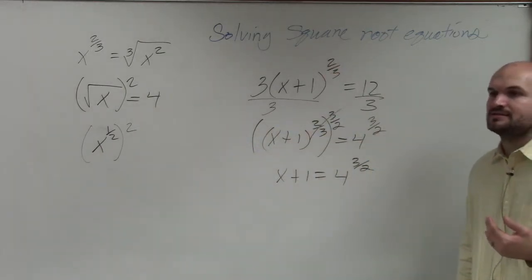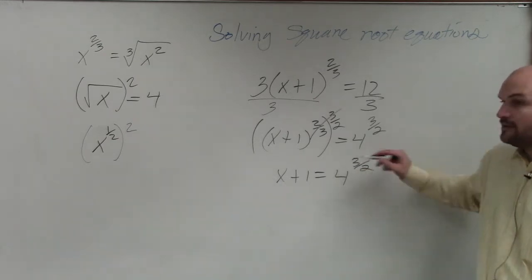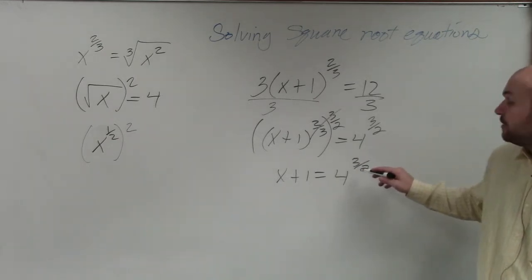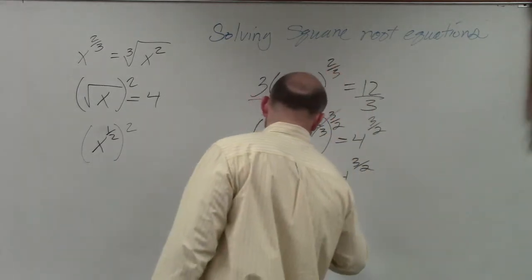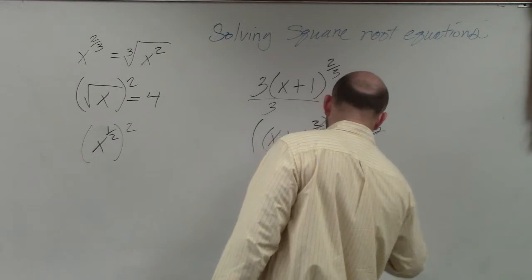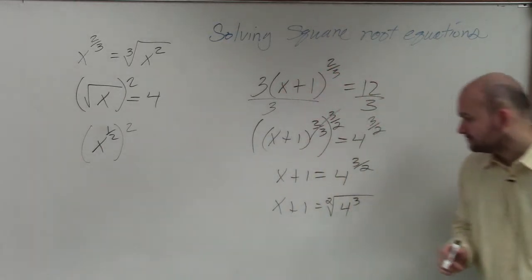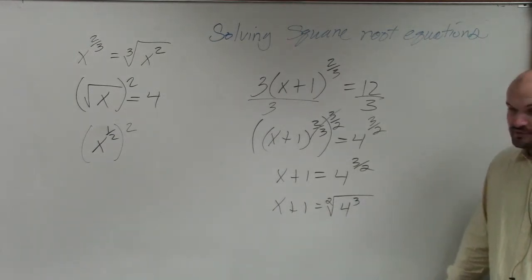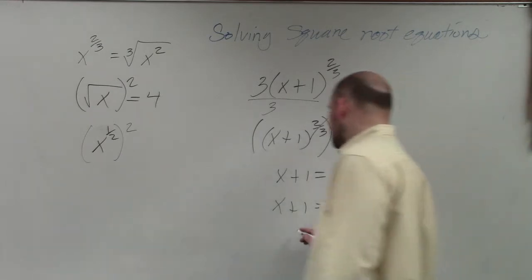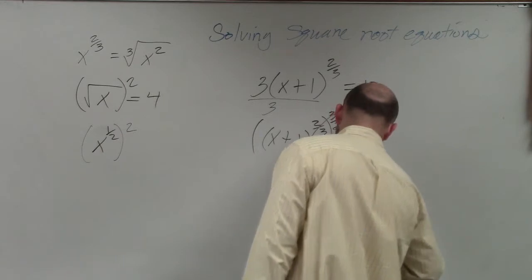And then you guys might be looking at this. Then what we go through on this is now we are going to simply rewrite this as a radical. So I'm going to have x plus 1 equals the square root of 4 cubed. Now we simply need to determine what 4 cubed is, which is 4 times 4 times 4, which is 64. So I have x plus 1 equals the square root of 64.